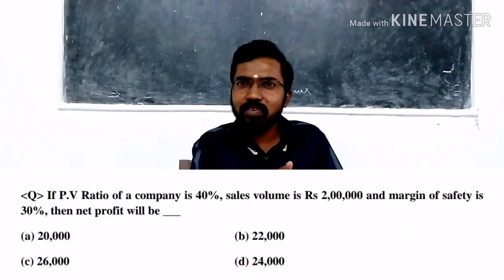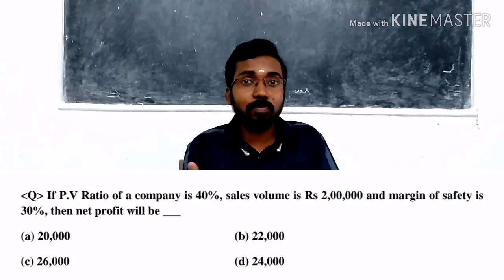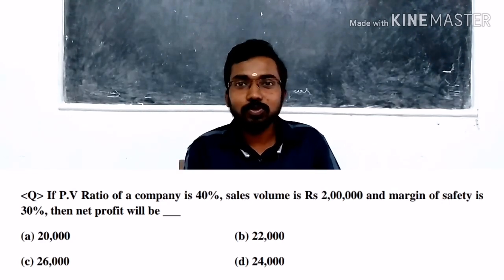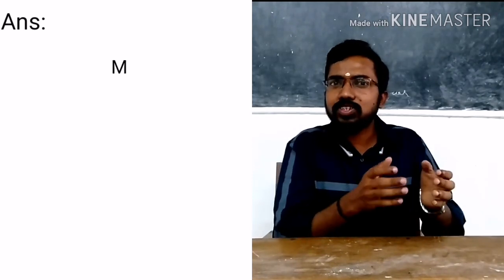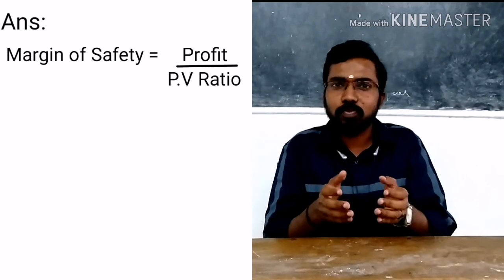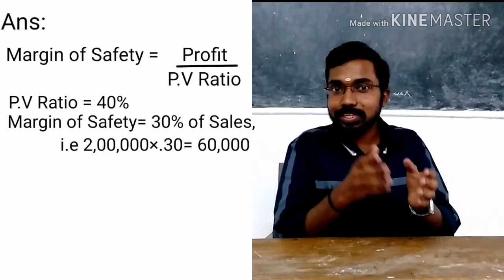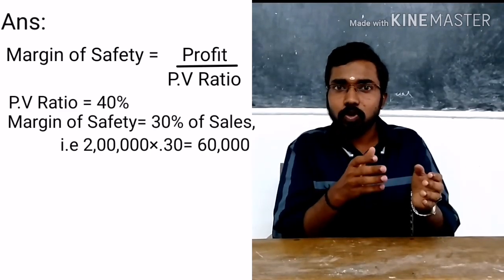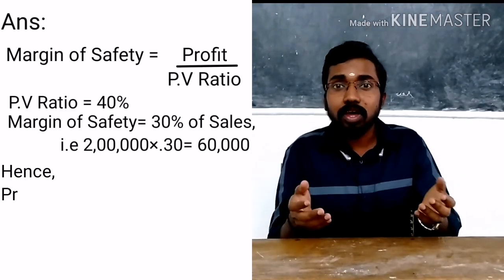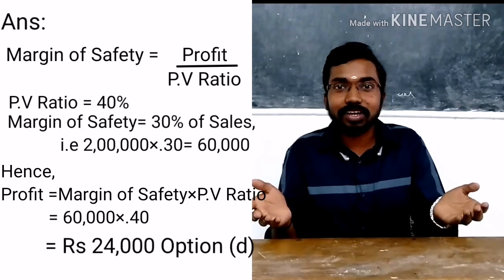Going to the third question: if the PV ratio of a company is 40%, sales volume is 2 lakh, and margin of safety is 30%, then net profit will be — option one: 20,000; option two: 22,000; option three: 26,000; option four: 24,000. Margin of safety equals profit divided by PV ratio. Margin of safety is 30% of sales, so 2 lakh × 30% = 60,000. Profit equals margin of safety × PV ratio: 60,000 × 40% = 24,000. The answer is option four — 24,000.